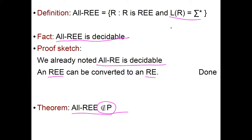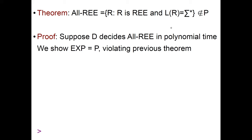The main theorem is that all-RE↑ is not in P. How do we prove this? We're going to use the previous result that EXP is not equal to P. We suppose towards a contradiction that some machine D decides all-RE↑ in polynomial time, and then show that EXP equals P, violating the previous theorem.